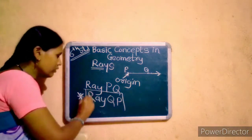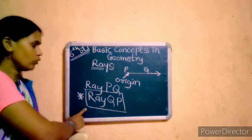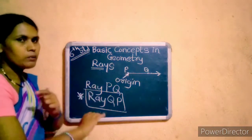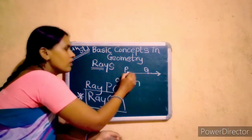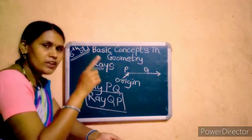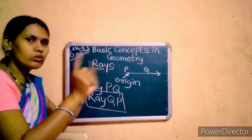We cannot read like this. We cannot read ray QP. Because ray starts from one point and goes forward in a direction.